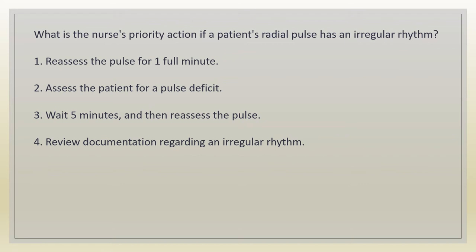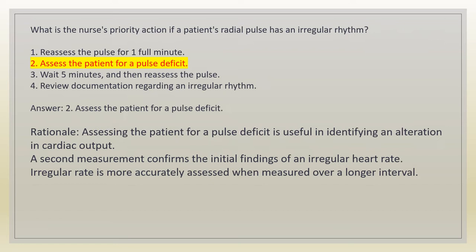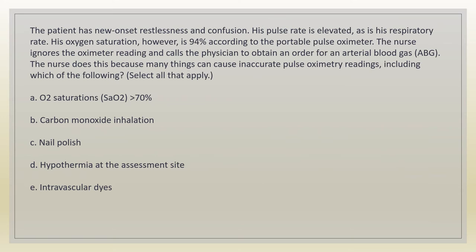What is the nurse's priority action if a patient's radial pulse has an irregular rhythm? 1. Reassess the pulse for one full minute. 2. Assess the patient for a pulse deficit. 3. Wait five minutes and then reassess the pulse. 4. Review documentation regarding an irregular rhythm. Answer: 2. Assess the patient for a pulse deficit. Rationale: assessing for a pulse deficit is useful in identifying an alteration in cardiac output. A second measurement confirms the initial finding of an irregular heart rate.